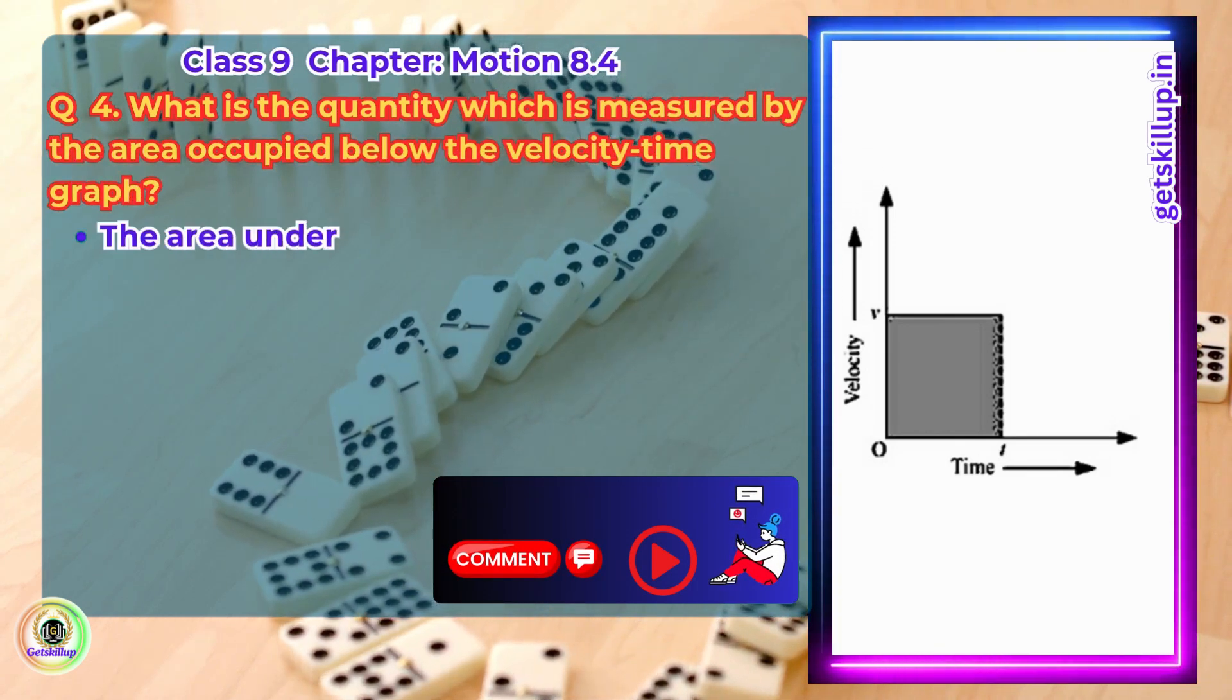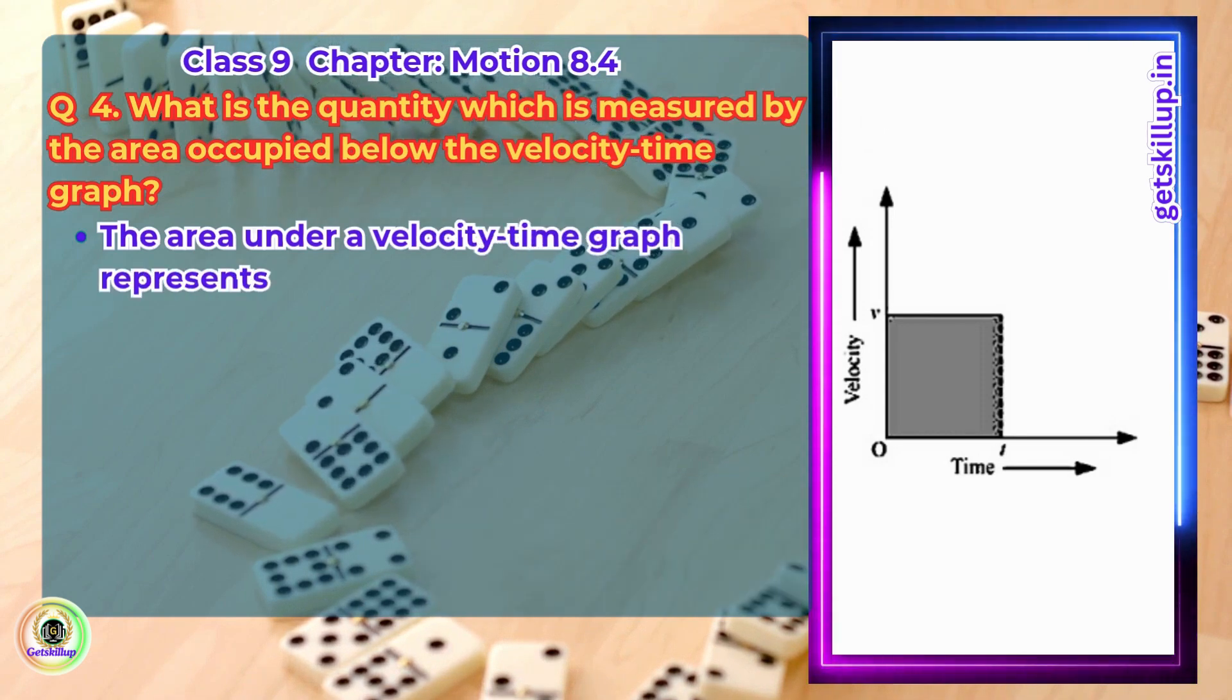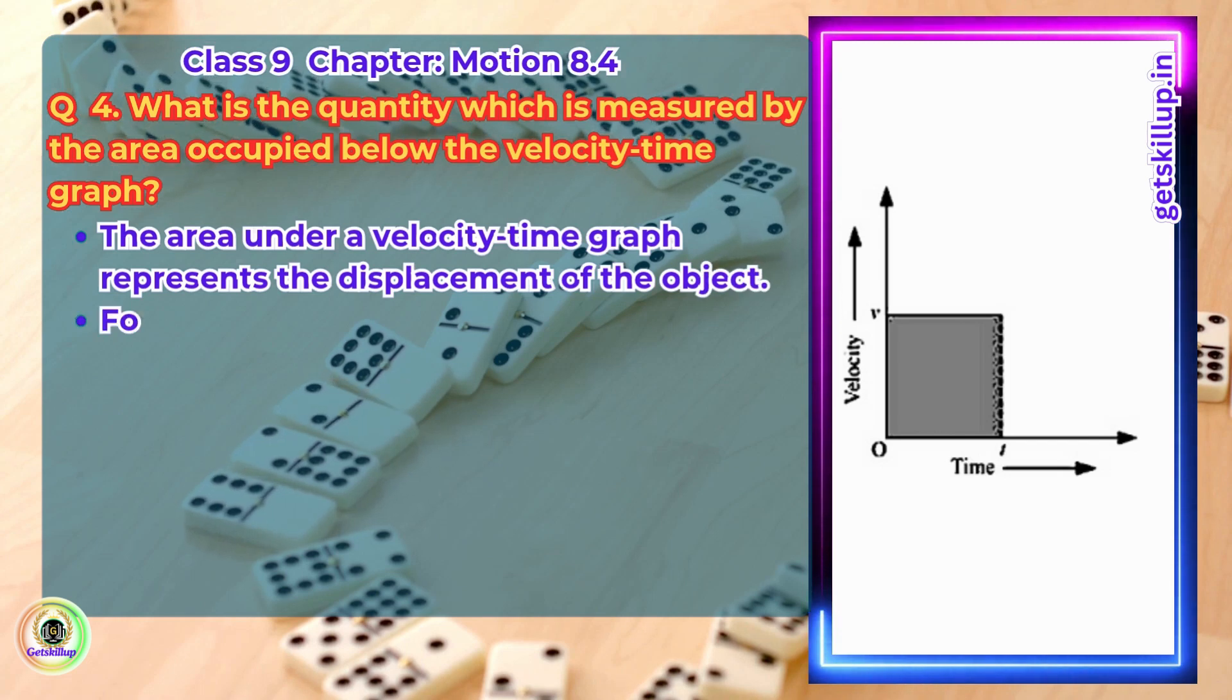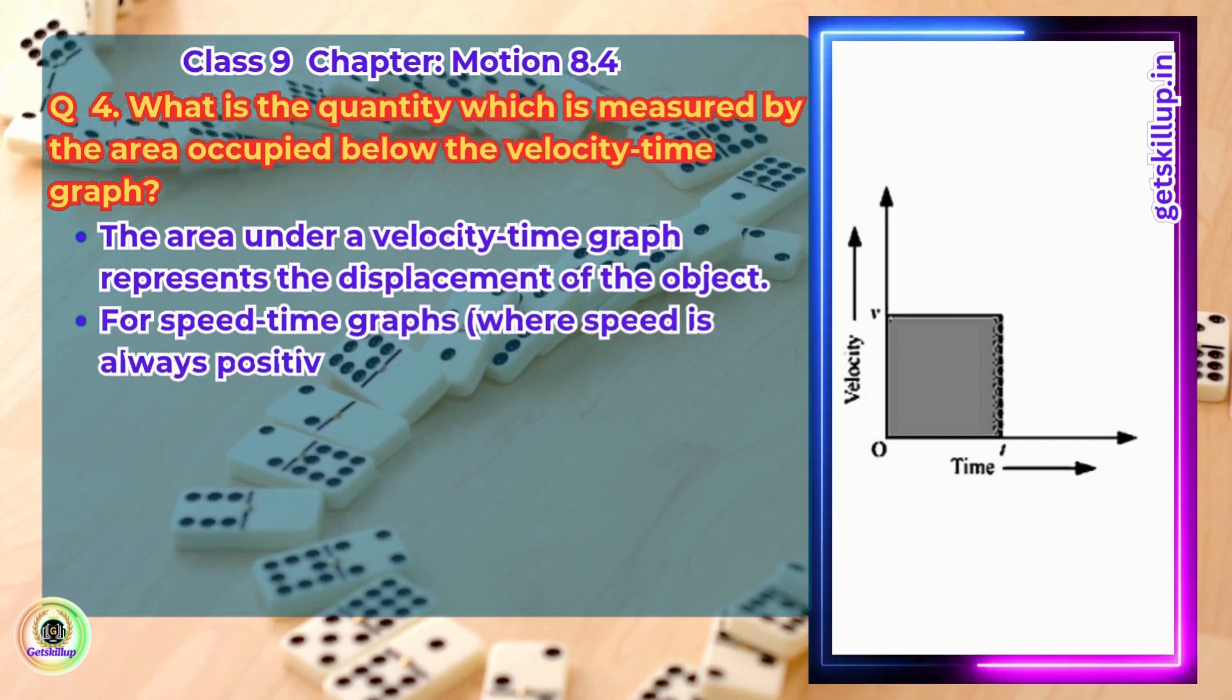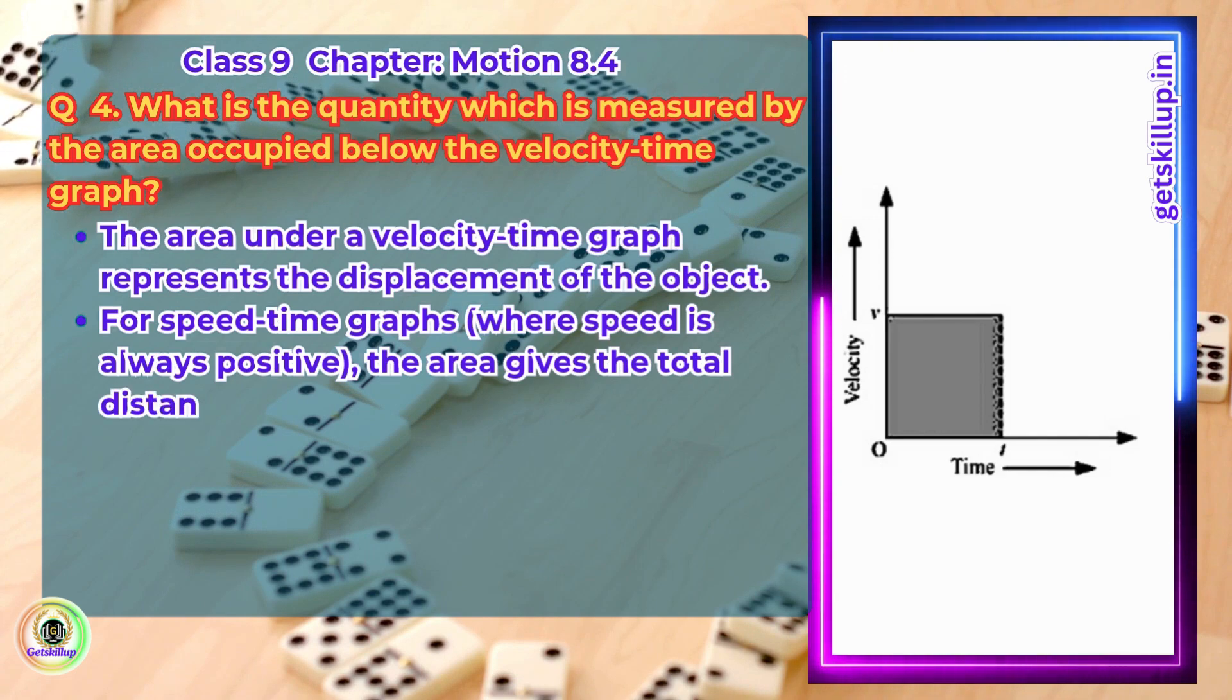Answer: The area under a velocity-time graph represents the displacement of the object. For speed-time graphs, where speed is always positive, the area gives the total distance traveled.